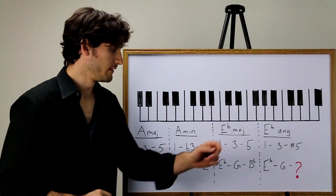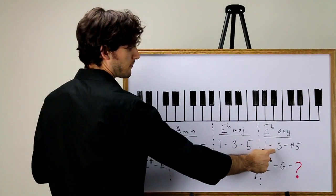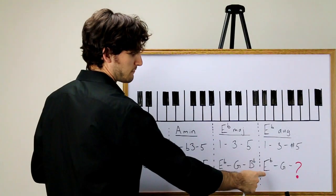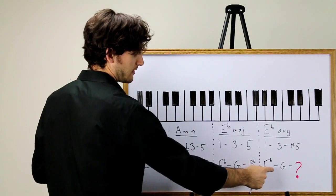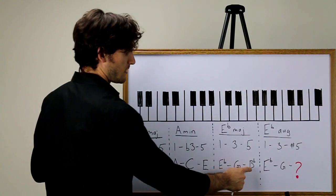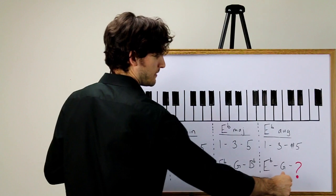E flat augmented is one, three, sharp five. So we have the one, which is E flat, the three, which is G. And then the sharp five must be a half step above B flat, so it's B.